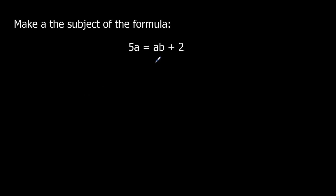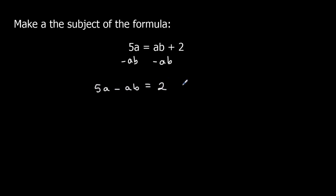So if I take away ab from both sides of the equation, that will give me 5a minus ab equals 2. So I've got the a's on the same side now, but how can I make 'a' the subject?